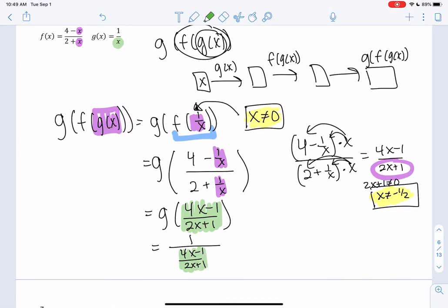So 1 over 4x minus 1 over 2x plus 1, as weird as that is. So we have a fraction in a fraction, so we multiply by LCD again, which there's only 1, so 2x plus 1, and those cancel out. 2x plus 1. So 2x plus 1 over 4x minus 1 is my final answer.